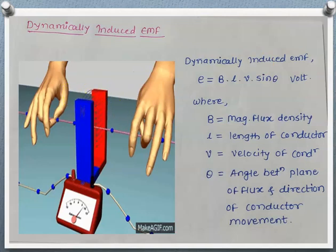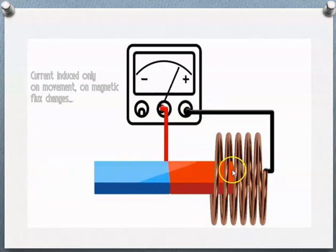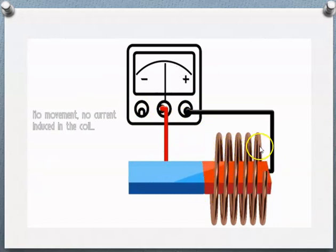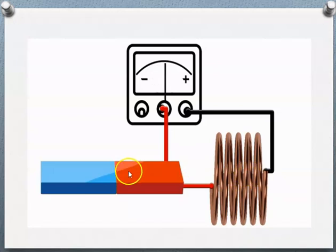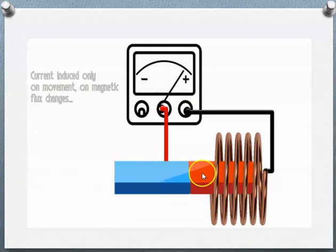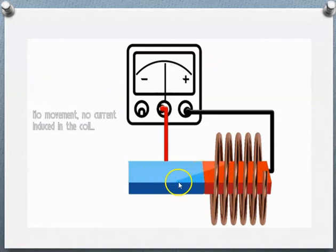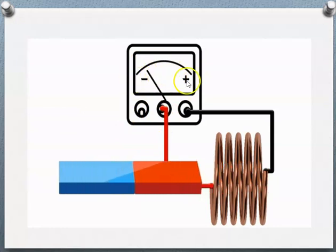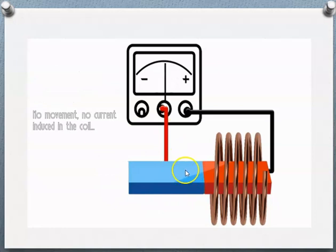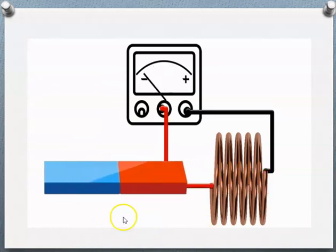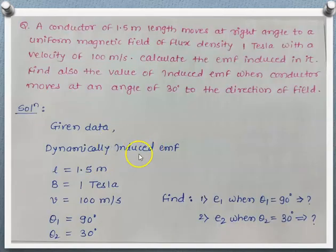The first case of dynamically induced EMF is when the conductor is moving and the field is stationary. Another case is when the conductor is stationary — wound in a number of turns — and the magnet is moving. This is another case of dynamically induced EMF. Physical movement of the magnet is present, so the induced EMF indicated by the pointer on the galvanometer scale is also dynamically induced EMF, because physical movement of the magnet is involved.